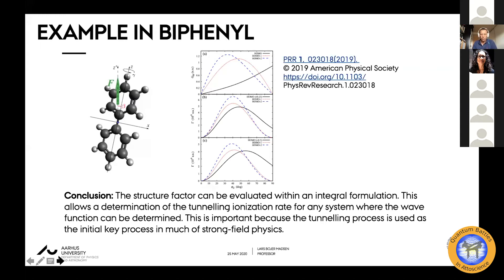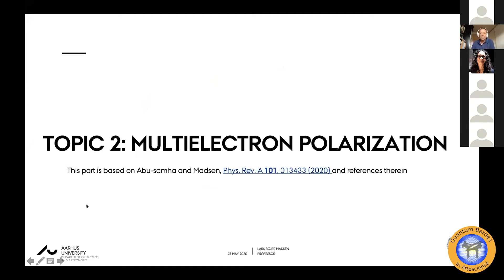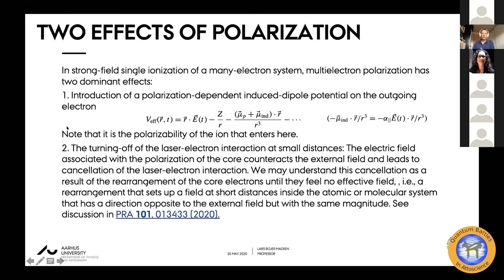This concludes the first part of the talk and leads me to the second one — namely multi-electron polarization. Some aspects of multi-electron polarization were already alluded to in the previous talk when discussing the modeling of argon and krypton experiments. In strong-field single ionization of a many-electron system, multi-electron polarization has two dominant effects. First, if we look at the effective potential of an outgoing electron, it will feel the interaction with the laser, the Coulomb potential, and to the next leading order it will feel an induced dipole potential and a permanent dipole potential. This induced dipole potential is expressed in terms of the polarizability and the field.